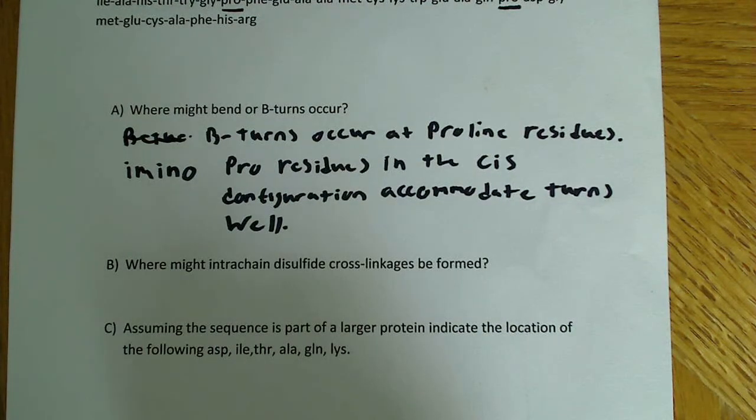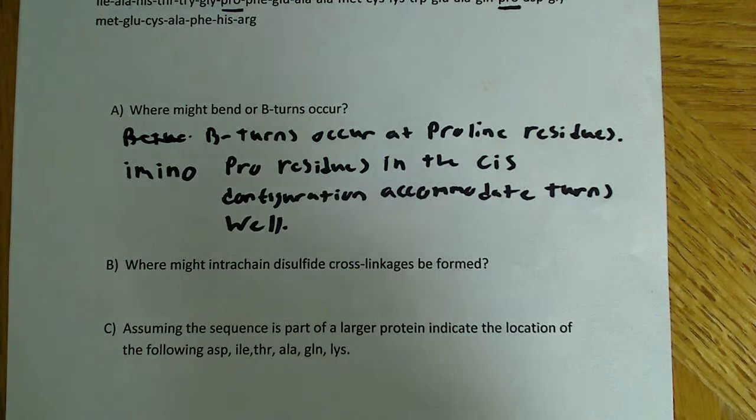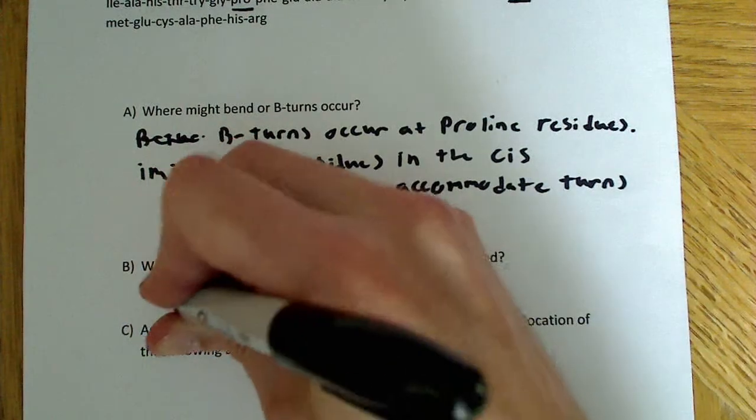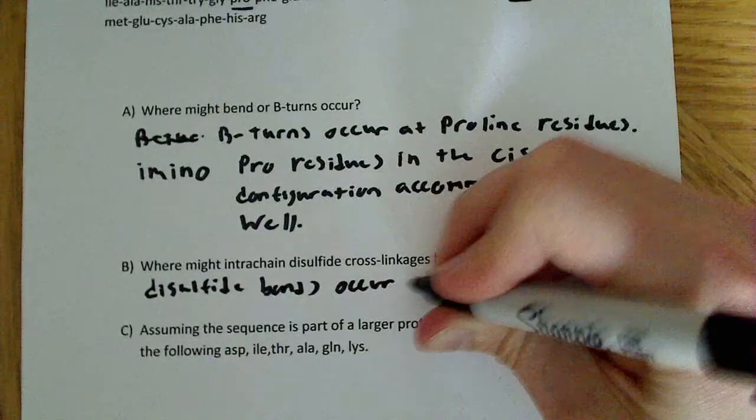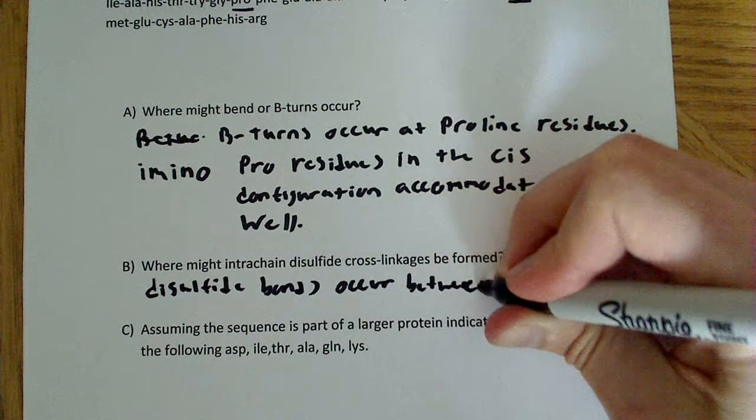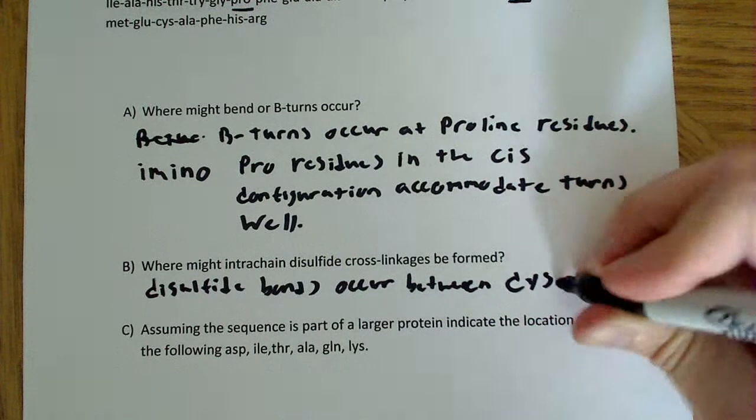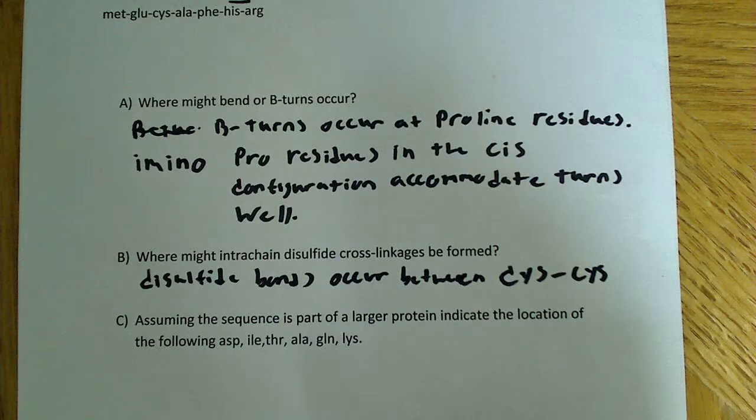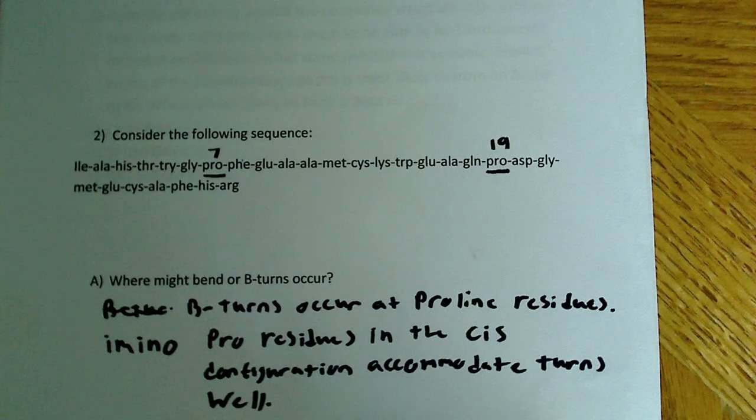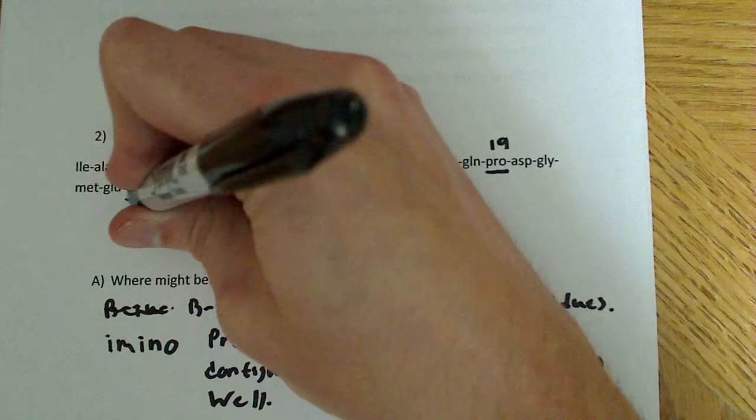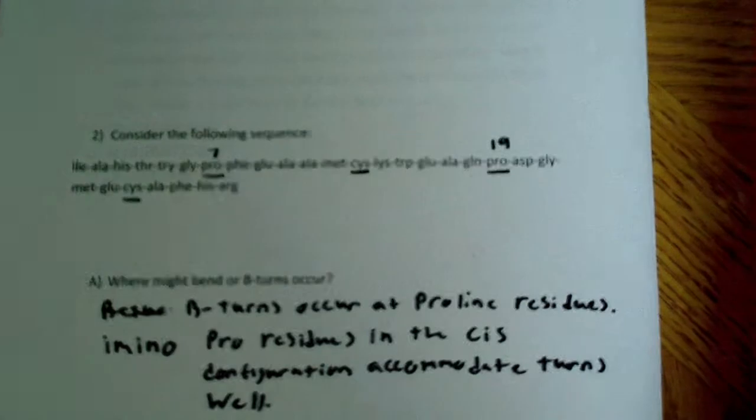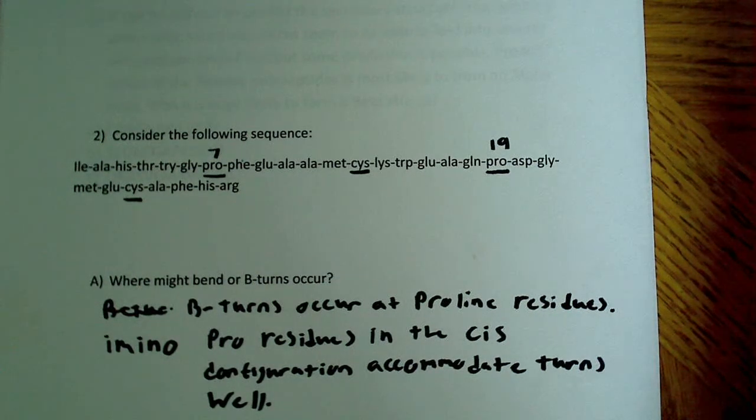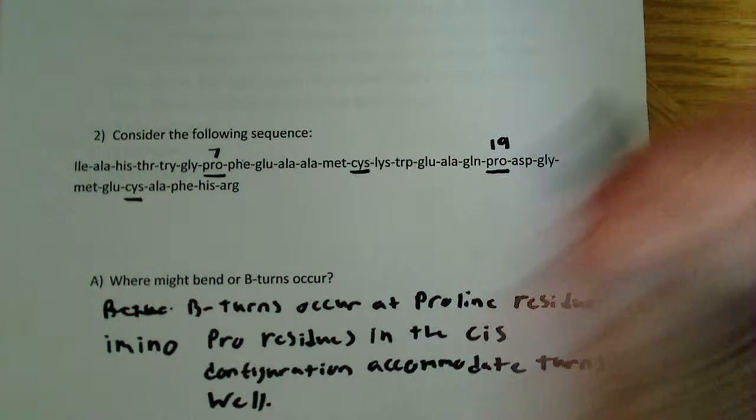And our second question says, where might intrachain disulfide cross-linkages be formed? Well, if we remember, disulfide bonds occur between two cysteine residues - a cysteine residue and a cysteine residue. So if I was looking at my polypeptide up here, I would be looking for two cysteine residues. I can see one here and another one up here. So the disulfide linkage would occur at positions 13 and 24, because these are the only two here.